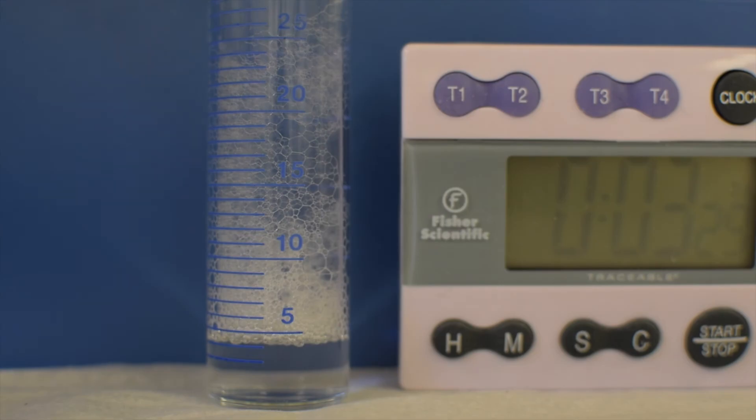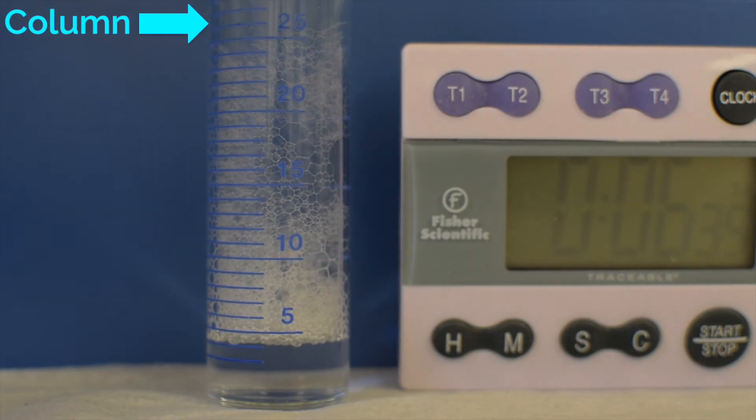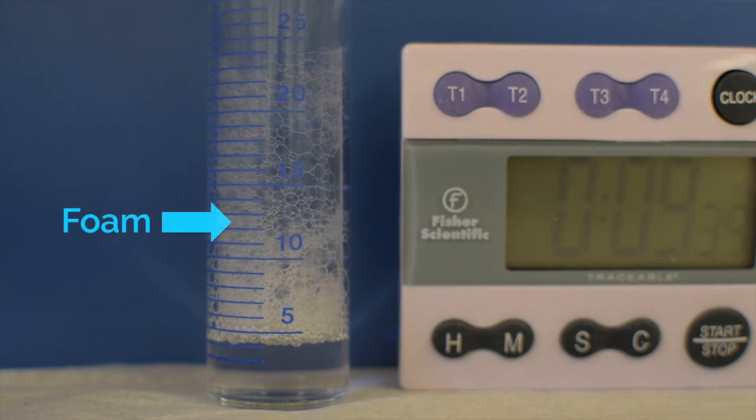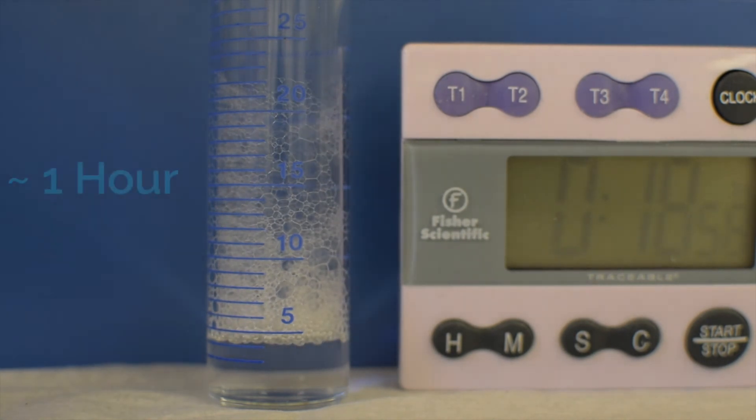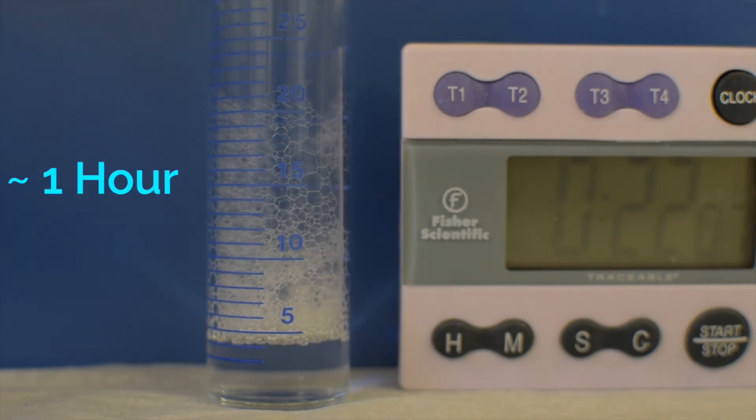Traditionally, foam stability is measured by bubbling nitrogen through a column containing surfactant. Once the foam is produced, the stability is observed over a period of time. In the case shown, the half-life of this foam was roughly an hour.